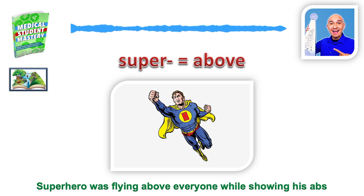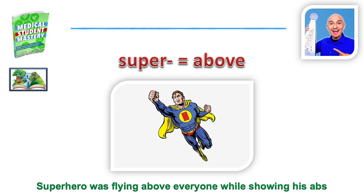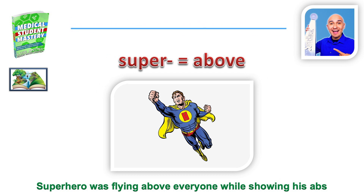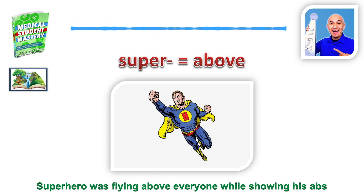Whenever you're having a hard time recalling what a word means — even though you can see the image clearly, like a superhero flying — you might wonder: does that represent flying? Jumping? So if you add an extra anchor like abs, it helps you remember the actual definition more clearly. You see the abs, and the superhero is above you. Super means above.